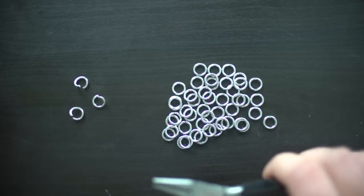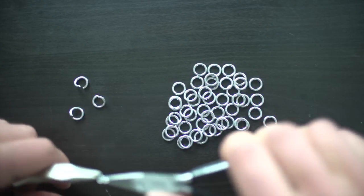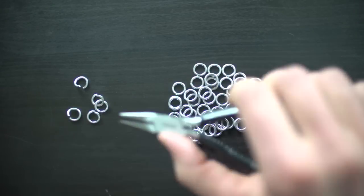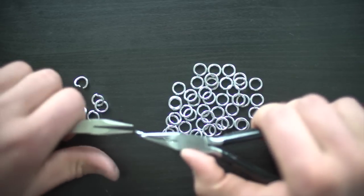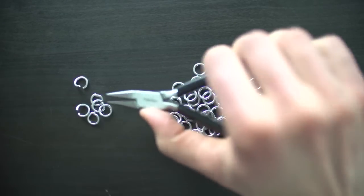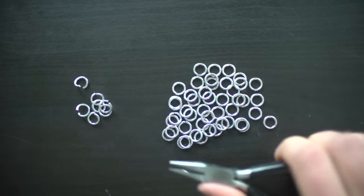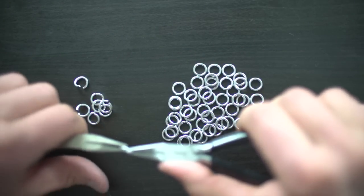So begin by gathering the supplies you'll need for this project. You'll need two pliers, a bunch of 16 gauge quarter of an inch rings, I'm using bright aluminum here, and you'll also need some rags to stuff the hacky sack with. I like to start off by closing and opening a bunch of rings before I start a project.